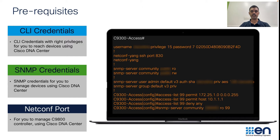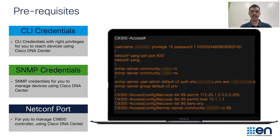Please make sure your CLI credentials, SNMP credentials, and netconf credentials are properly configured on your network devices before we start the discovery workflow. The CLI credentials with right privileges, SNMP credentials or SNMP ACLs, and netconf port 830 along with any authorization privileges for netconf should be properly configured before we start the discovery workflow.